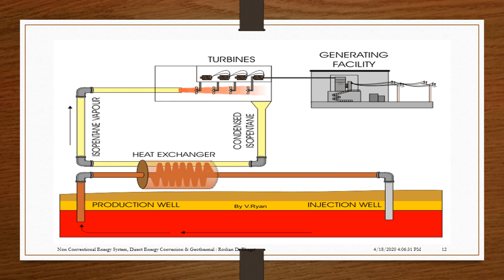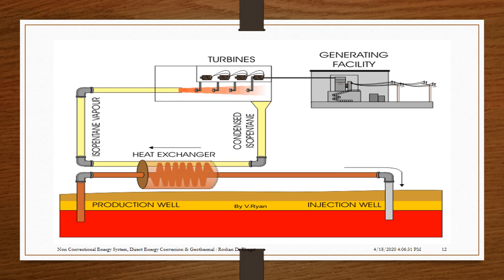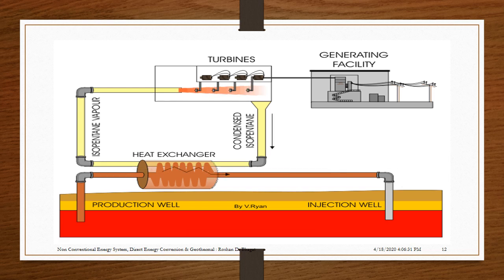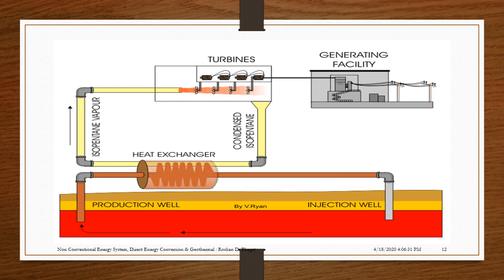The animation shows a geothermal power plant using a heat exchanger — this is a binary fluid system. When the temperature of the fluid from the production well is low, a binary fluid system is used. A secondary fluid with a lower boiling point, such as isopentane vapor, is used. The hot primary fluid from the production well exchanges heat with the secondary fluid. The secondary fluid drives the turbine coupled to a generator, and the primary fluid is sent back to the earth through the injection well.